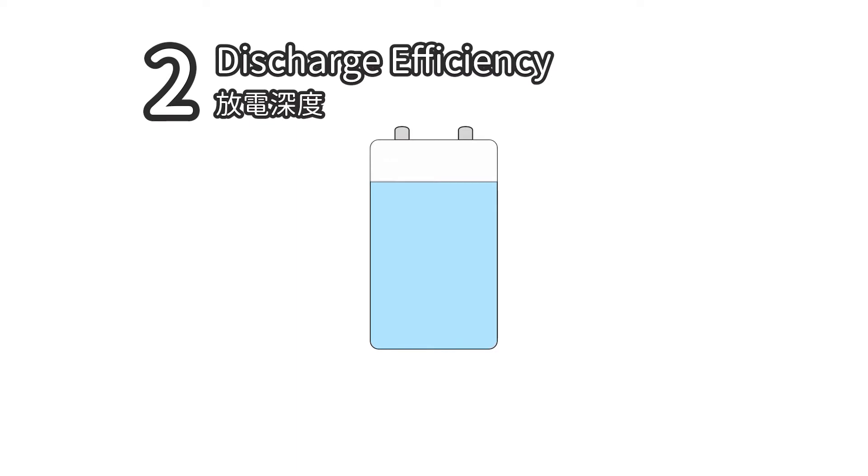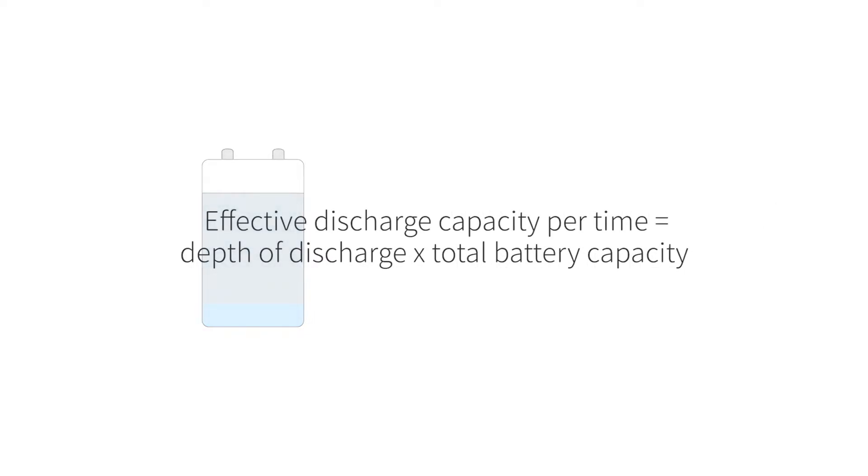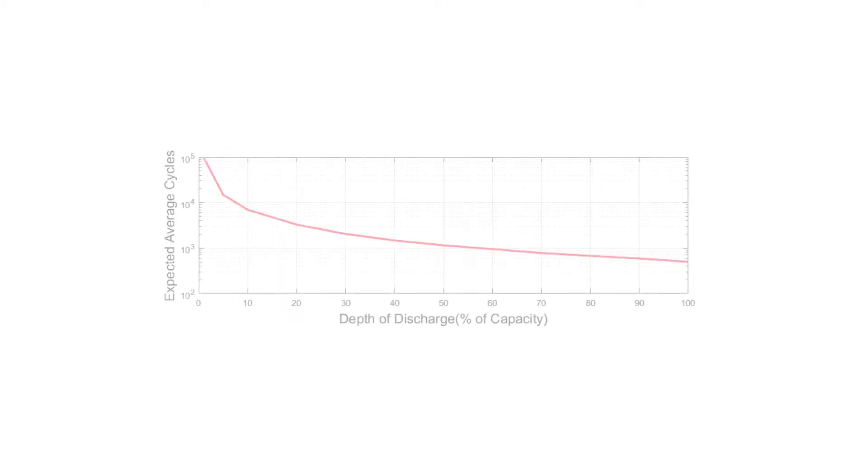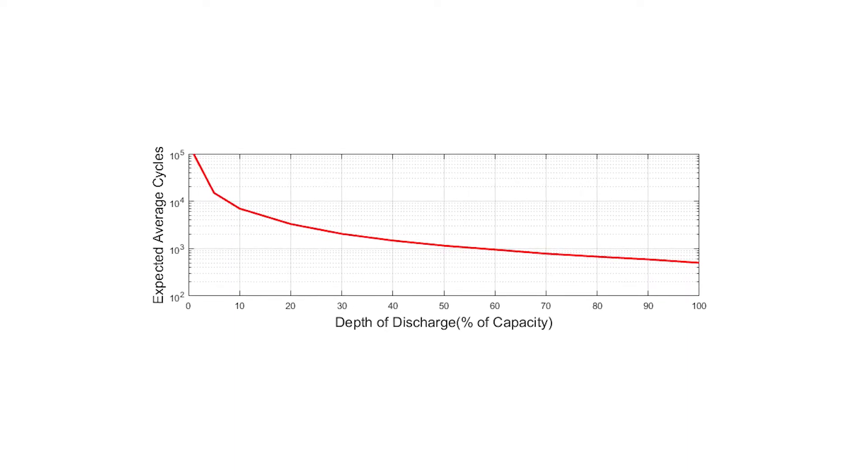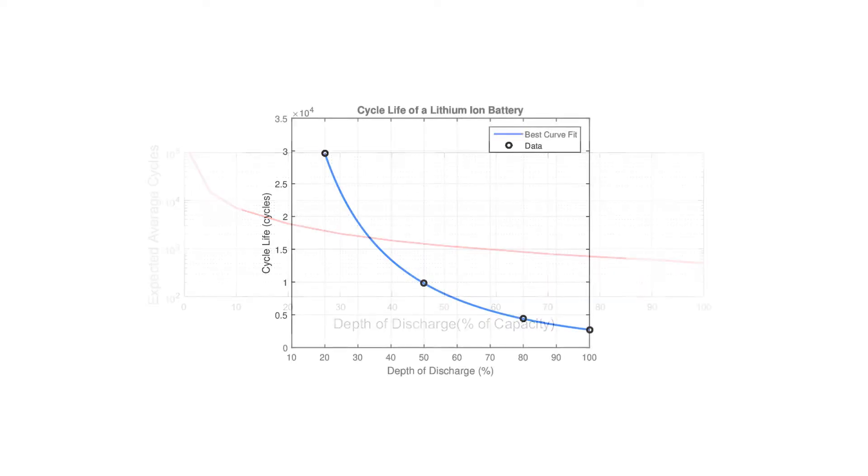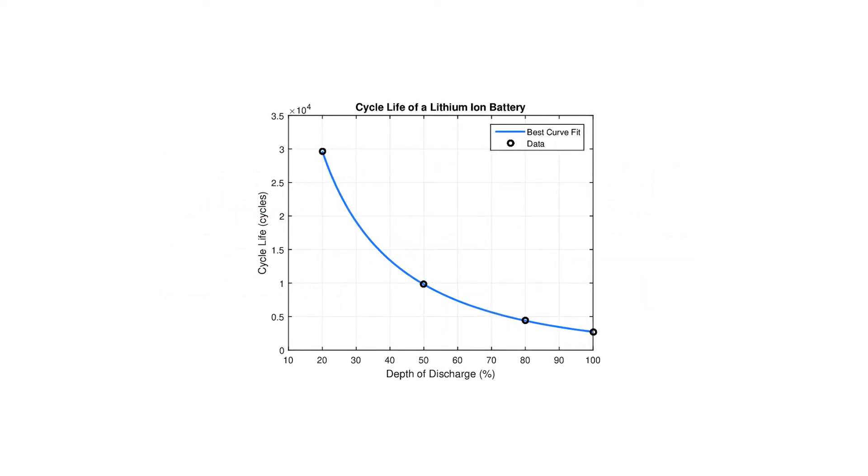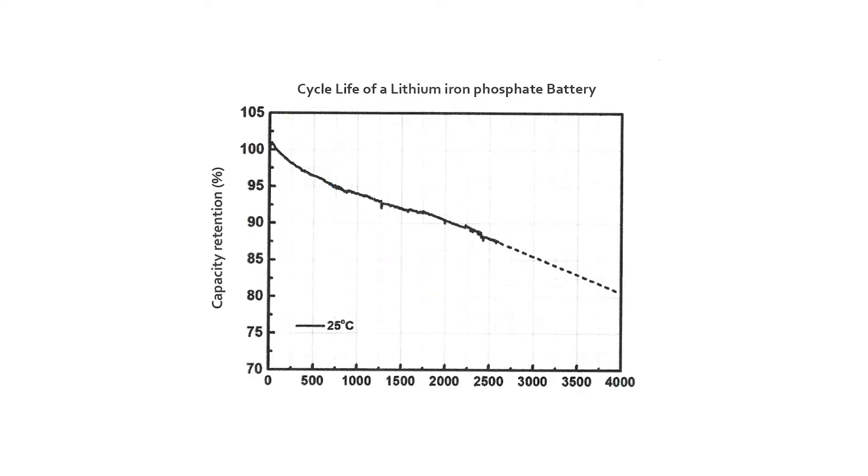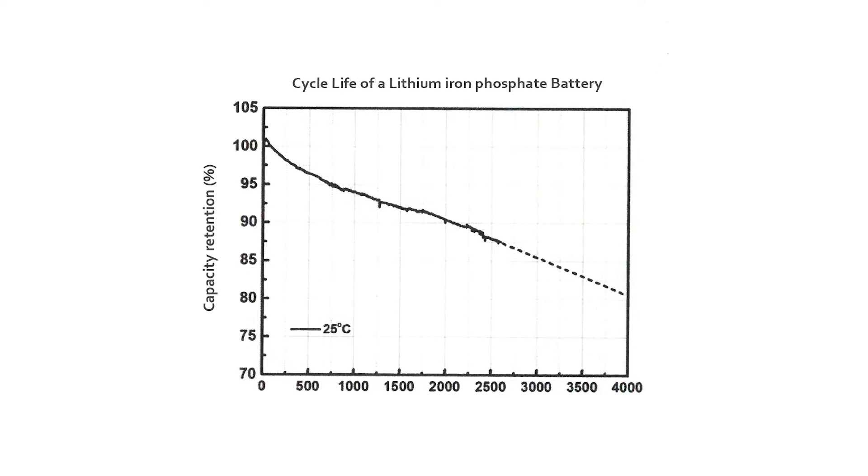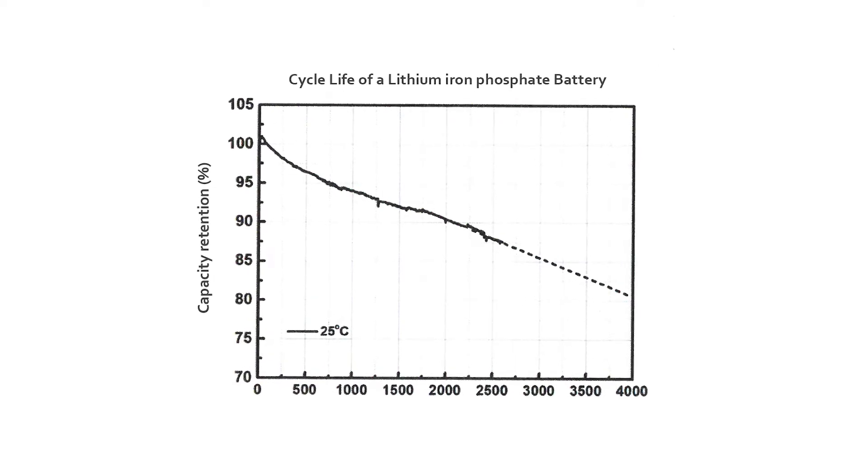2. Depth of discharge. The depth of discharge is 90%, and the remaining state of charge is 10%. Power per effective discharge equals depth of discharge times total battery capacity. Lead-acid batteries have a depth of discharge of 50%. To put it simply, lead-acid batteries are only half usable. 90% depth of discharge for lithium-ion batteries. That is, 90% can be used. The lithium-ion phosphate battery has a depth of discharge of 95%. That is, 95% can be used.